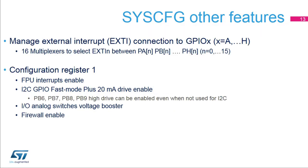The system configuration controller manages the selection of the GPIO to the external interrupt or event signal, which is used as an asynchronous external interrupt or event with wake-up from stop capability.